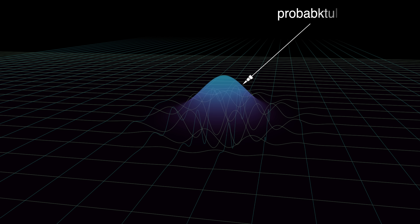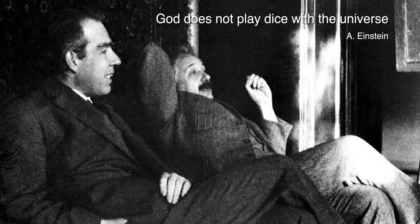No longer is the universe deterministic. This made a lot of scientists — especially Einstein — uncomfortable. But the Born rule, as it is now called, remains at the heart of quantum mechanics because it is spectacularly successful at predicting the outcomes of experiments.